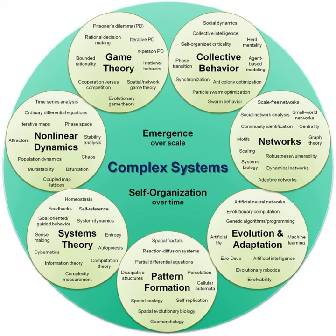A system can exhibit properties that produce behaviors which are distinct from the properties and behaviors of its parts. These system-wide or global properties and behaviors are characteristics of how the system interacts with or appears to its environment, or of how its parts behave in response to external stimuli, by virtue of being within the system. The notion of behavior implies that the study of systems is also concerned with processes that take place over time or, in mathematics, some other phase space parameterization.